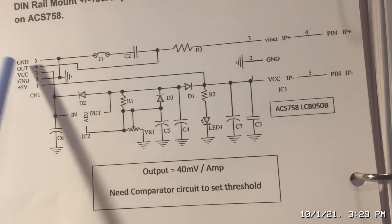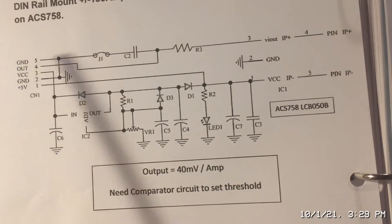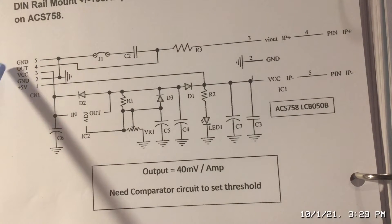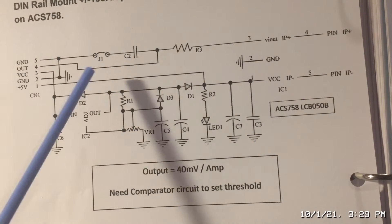And now pin 4 is your analog output so remember what we said we said that 40 millivolts is equal to 1 amp so as your current increases for every 1 amp the voltage will increase by 40 millivolts.